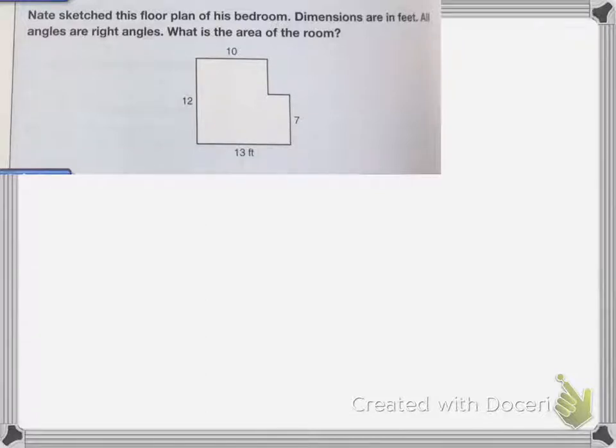So I do not have a number for this length or for this one. So I have to figure out what that is. So for this length, if my full area is 12, or my full length is 12, and the shorter length is 7, that means this length here has to be 12 minus 7, which is 5. For the other one, my full width is 13, the shorter one is 10, which means that this length must be 13 minus 10, which is 3.